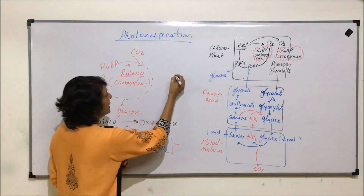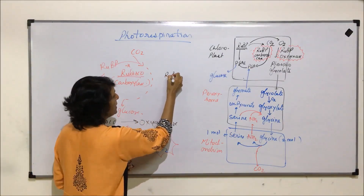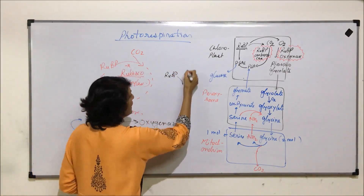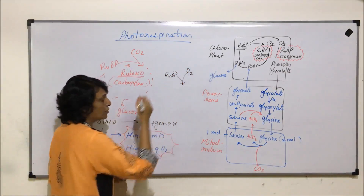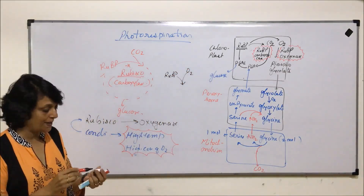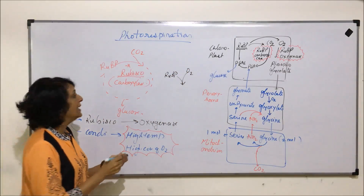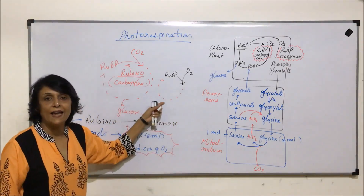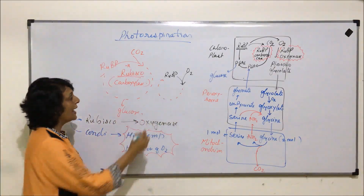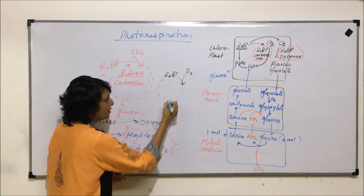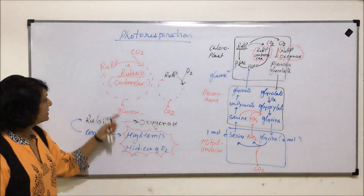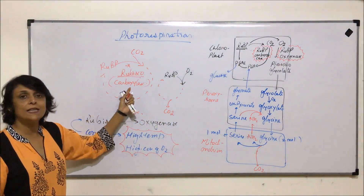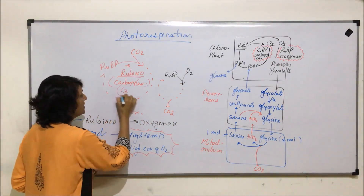The difference is that RuBP, instead of binding with carbon dioxide, will now bind with oxygen. Oxygen will be taken in and in this process some different compounds will be synthesized like glycolate. By the end of this process, carbon dioxide will be released. That means it is going to be exactly opposite of what is happening in the C3 cycle.